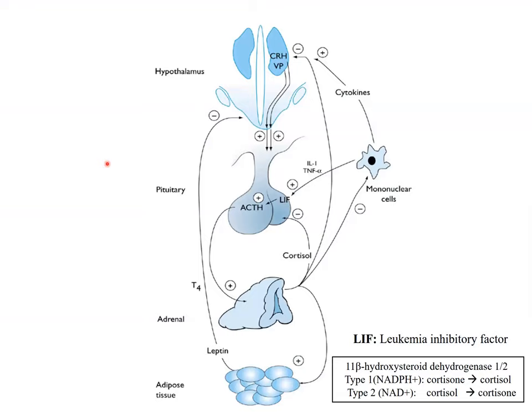The regulation of the adrenal cortex is mainly governed by the ACTH-cortisol axis. Cortisol feeds back to inhibit pituitary ACTH release. The mineralocorticoid is regulated differently; however, it can be influenced by ACTH as well, because the first step — the side-chain cleavage enzyme — is regulated by ACTH. The major regulatory step for mineralocorticoids is the renin-angiotensin-aldosterone system.